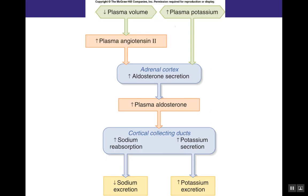Another flow chart shows that whether there's a decrease in plasma volume or an increase in plasma potassium levels, both lead to an increase in aldosterone secretion from the adrenal cortex. Once aldosterone is secreted and plasma aldosterone levels rise, it travels to the cortical collecting duct where it promotes sodium and chloride reabsorption and potassium secretion. In the end, sodium excretion is decreased and potassium excretion is increased. Now let's look at the renin-angiotensin system.